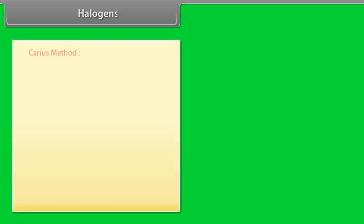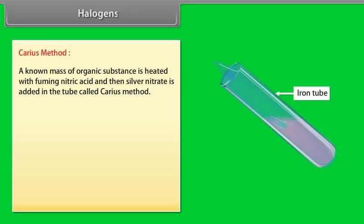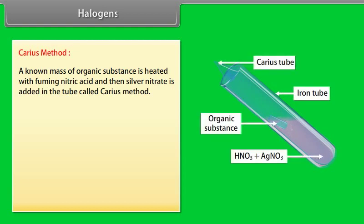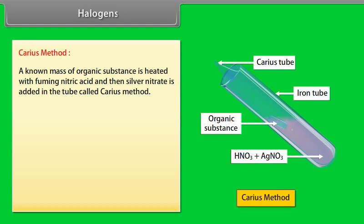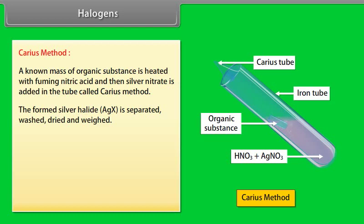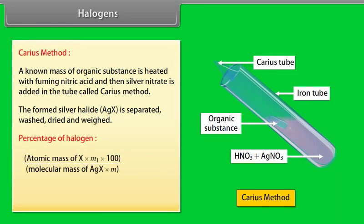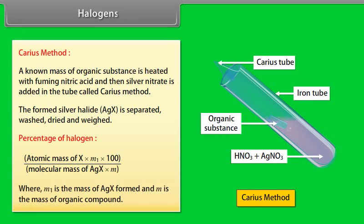Halogens — Carius Method: A known mass of organic substance is heated with fuming nitric acid and then silver nitrate is added in a sealed tube. The formed silver halide is separated, washed, dried, and weighed. Percentage of halogen = (atomic mass of X × M1 × 100) ÷ (molecular mass of AgX × M), where M1 is the mass of AgX formed and M is the mass of organic compound.